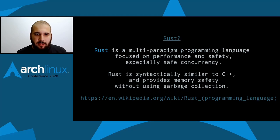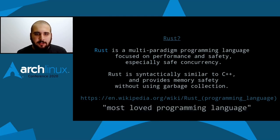So, the Rust programming language. Rust is a multi-paradigm programming language focused on performance and safety, especially safe concurrency. Version 1.0 of Rust was released in 2015, and since 2016 it has been the most loved programming language according to the Stack Overflow Developer Survey.